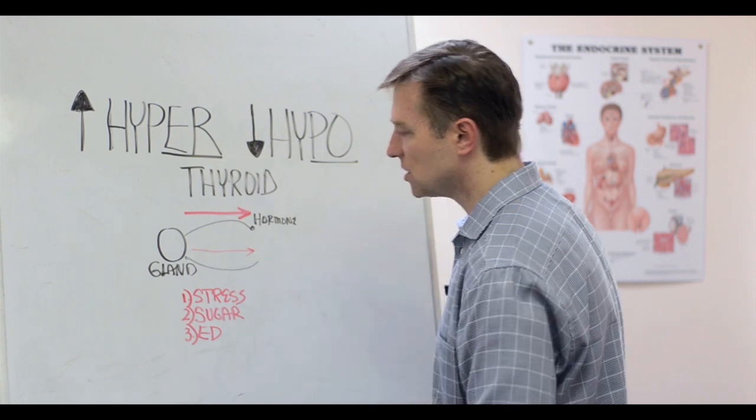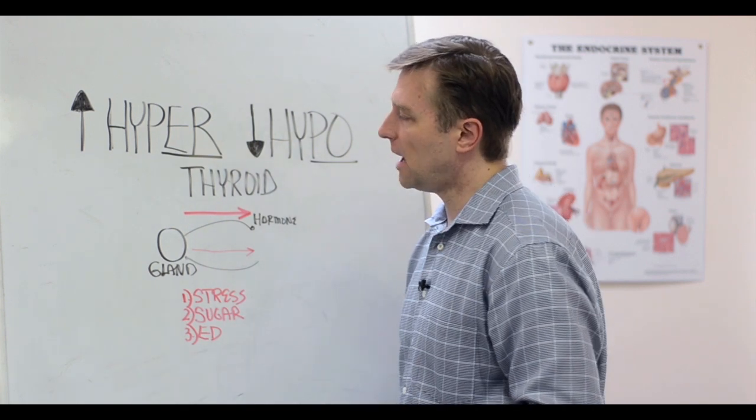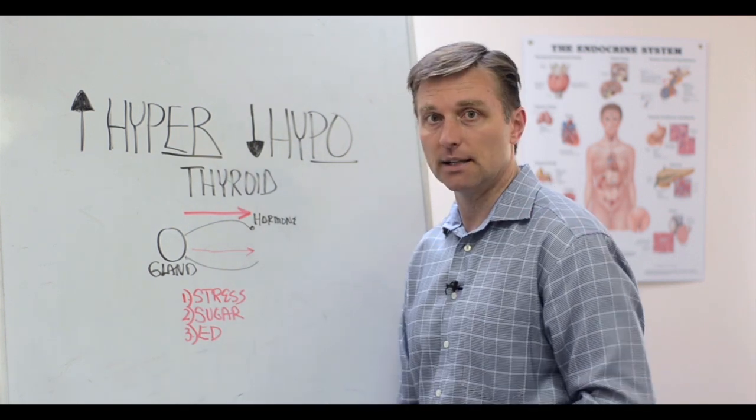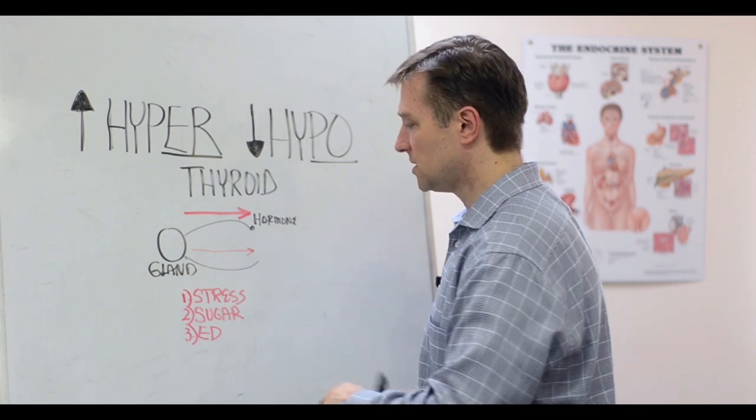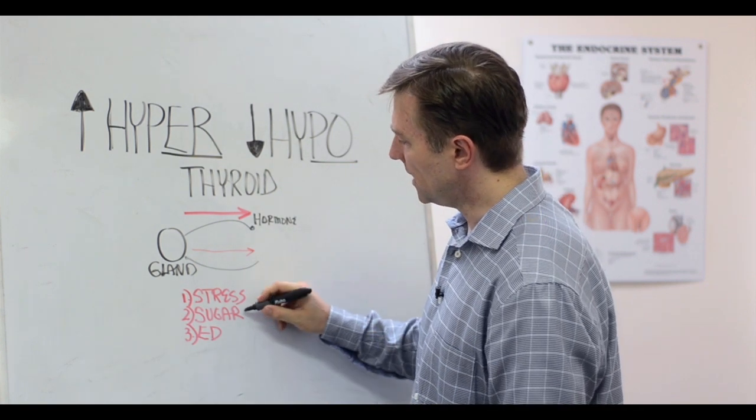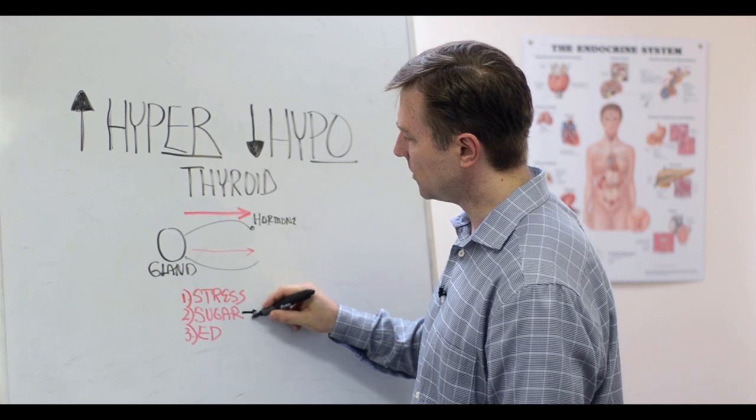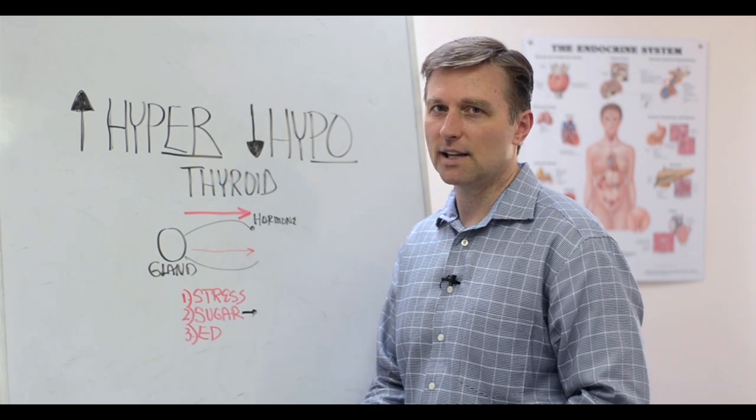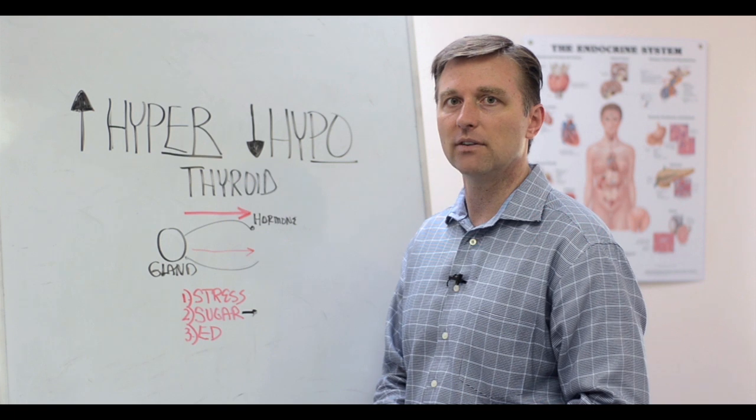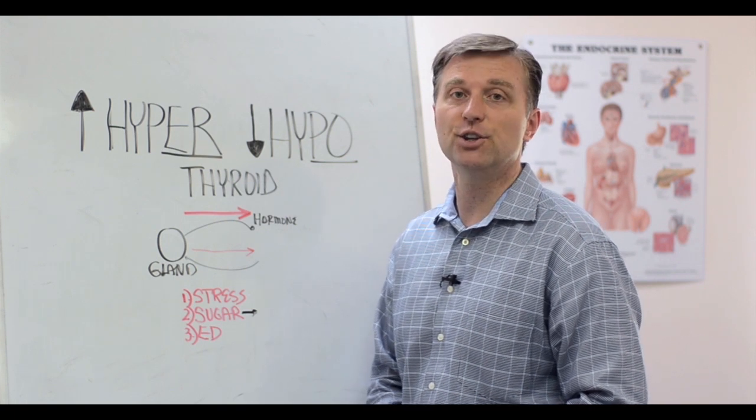When you eat sugar, that pancreas responds by pumping out insulin to lower the sugar in your blood. So if you're doing this too much, and I love how people say, well, I'm just eating normal amounts of sugar. Wait a second, what is normal amounts of sugar? The average person has 145 pounds of sugar a year.